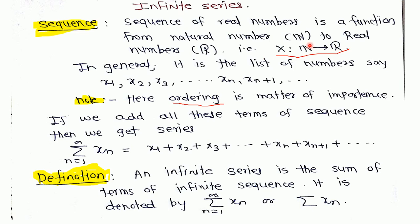One important thing: in a sequence, ordering is very important, because the sequence x1, x2, x3 is a different sequence from x2, x1, x3, and so on. To understand sequences in more detail, please watch my video related to sequences. If we add all the terms of the sequence — that is x1 plus x2 plus x3, and so on — then we get the series.